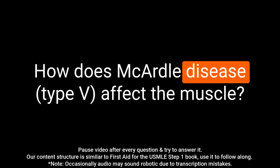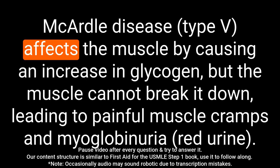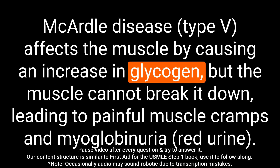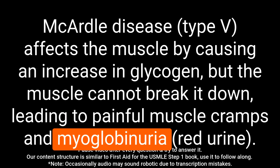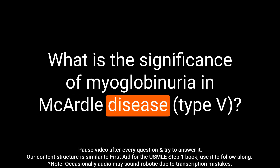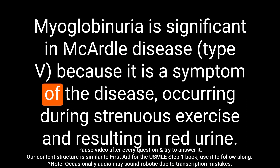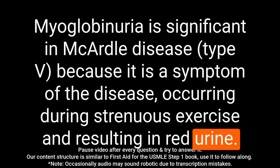Question: How does McArdle disease affect the muscle? Answer: McArdle disease affects the muscle by causing an increase in glycogen, but the muscle cannot break it down, leading to painful muscle cramps and myoglobinuria. Question: What is the significance of myoglobinuria in McArdle disease? Answer: Myoglobinuria is significant because it is a symptom occurring during strenuous exercise, resulting in red urine.